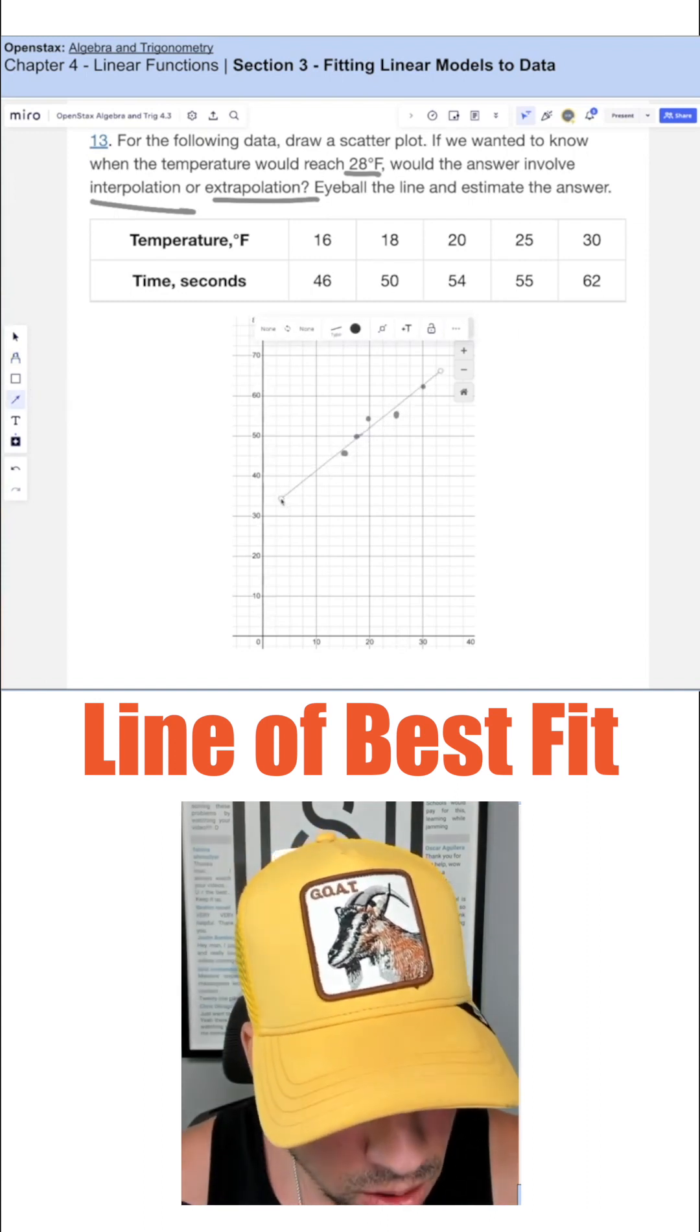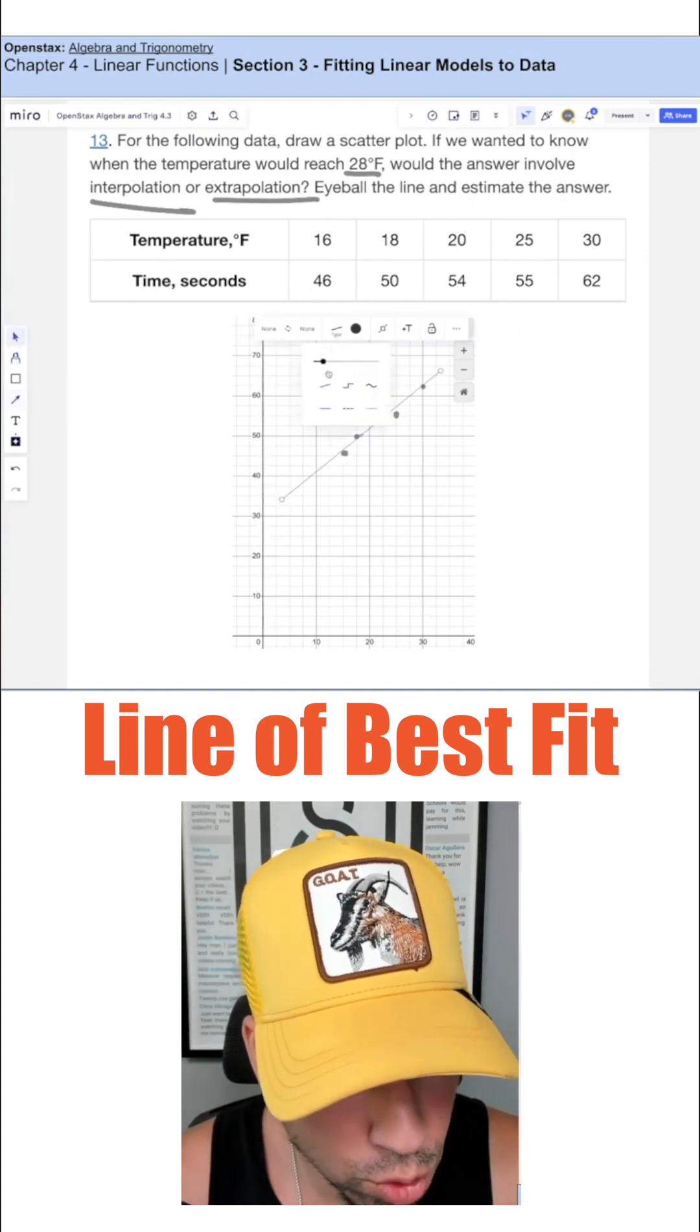So if we wanted to make an approximate linear model, it might look like this, like a nice regression line like so.